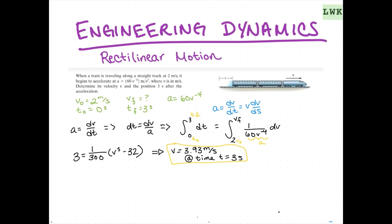So, now let's look at the position after 3 seconds. So, let's use this new a equals v dv/ds expression. So, we can write this a little bit simplified as ds equals v dv over a.